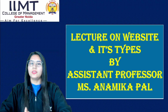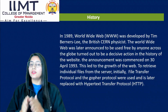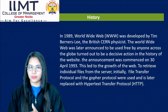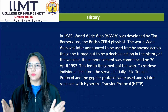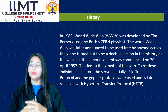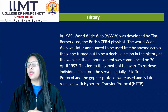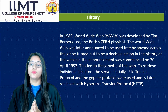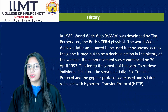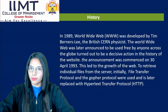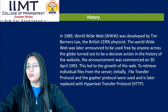To understand what a website is, we first need to know the history of the website. In 1989, the World Wide Web (WWW) was developed by Tim Berners-Lee, the British CERN physicist. The World Wide Web was later announced to be used free of charge, and that was the best decision taken. This is the history of how websites became so popular.